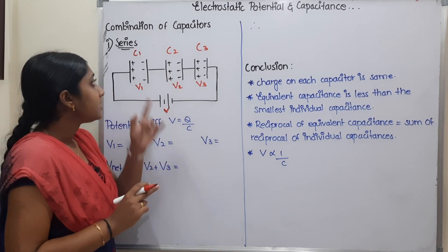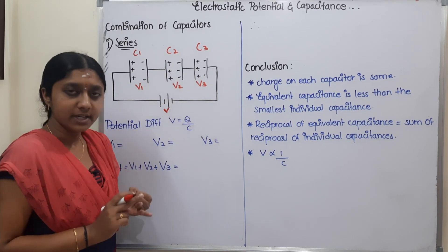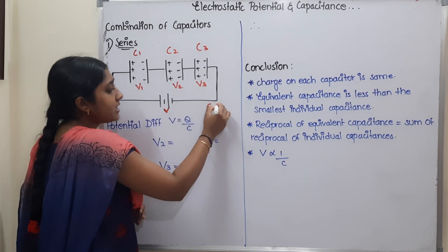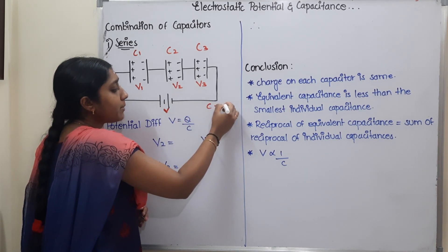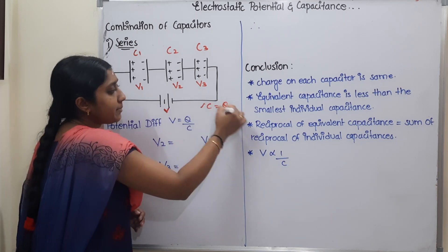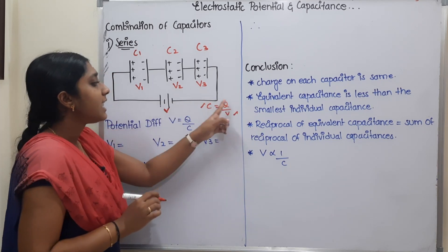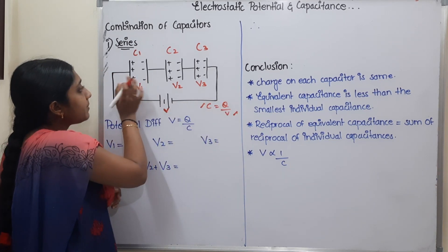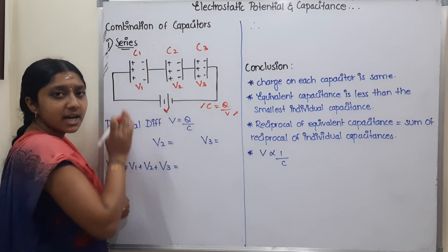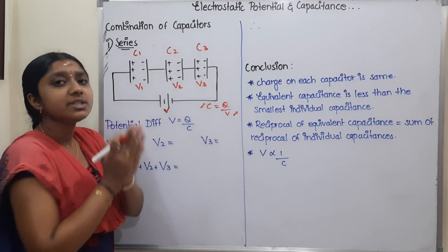The formula is C = Q/V. If you look at all three capacitors in series, the charges are the same across all three capacitors. Three capacitor charges are the same.